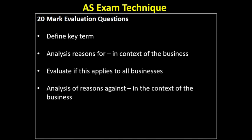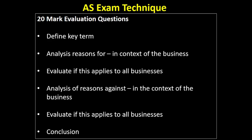If I were answering the question, because I know the case study, I would suggest that raising finance is the most important influence, or that the length of the product life cycle is the most important influence on decision making — Mind Candy suffers from relatively short product life cycles. Then evaluate if this applies to all businesses and write a conclusion. Your conclusion should address: should ethics be the most important influence in the context of the business — yes or no? Does that apply to all businesses — yes or no? Support the answer. That's your basic structure for answering these 20 mark evaluation questions.